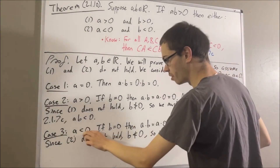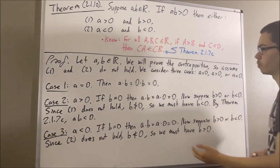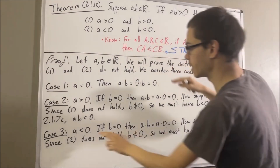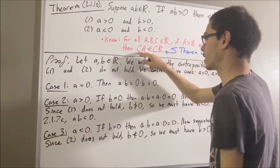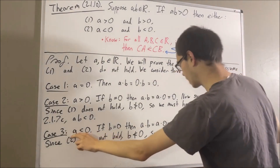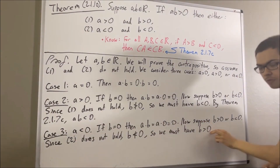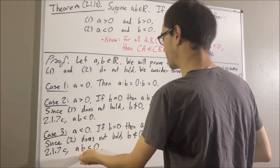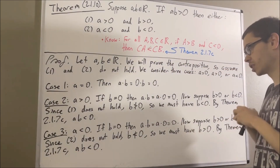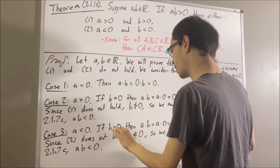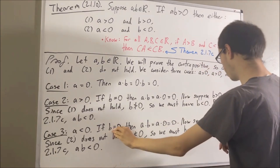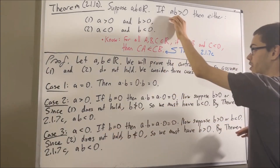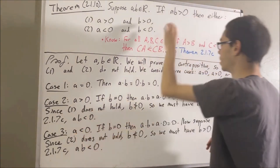So we see that A is less than zero and B is greater than zero. Applying theorem 2.1.7c — if we call B capital A, zero capital B, and A capital C — it follows that CA is less than CB, or in this case A times B is less than A times zero, which means AB is less than zero. So again we've established that AB is not greater than zero. In the case where A is less than zero, whether B equals zero, B is greater than zero, or B is less than zero, AB is not greater than zero. That completes case three.